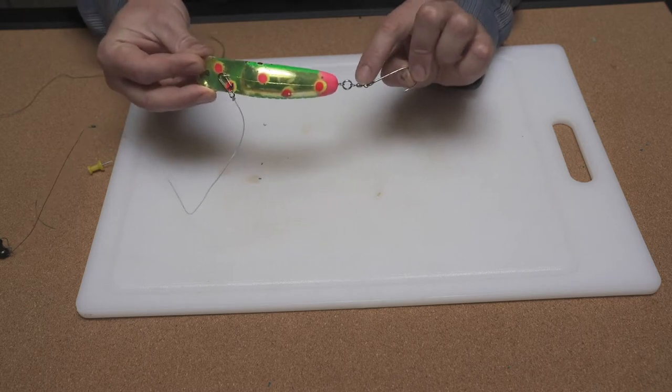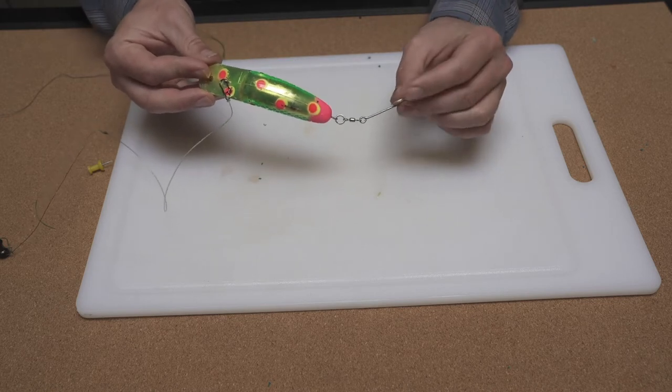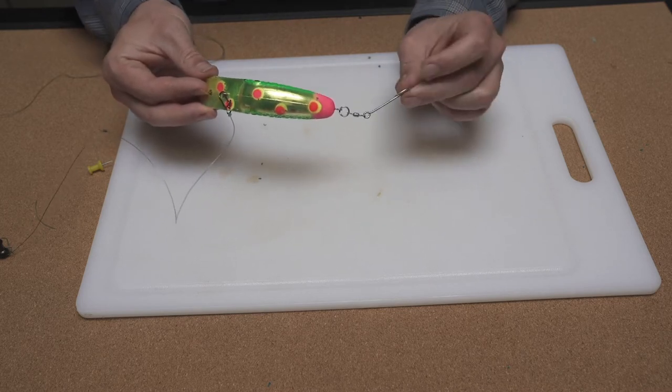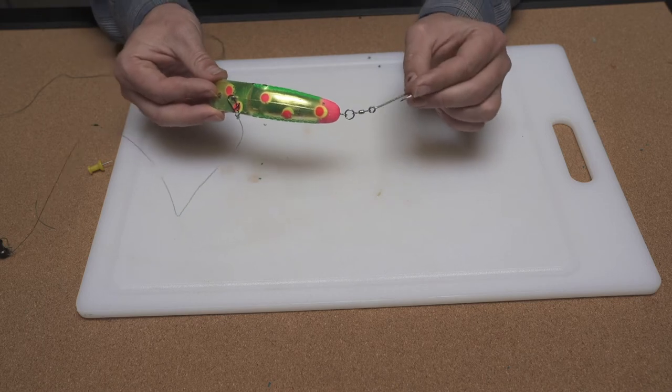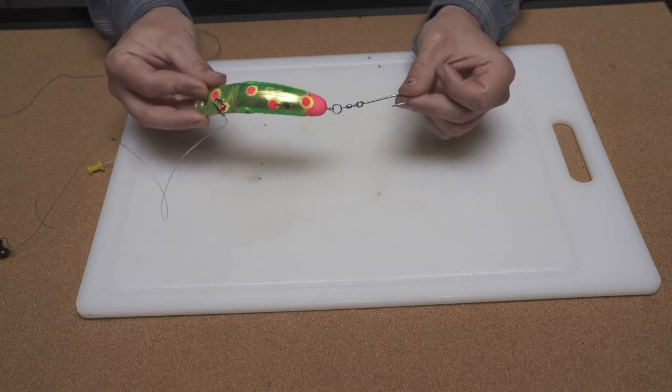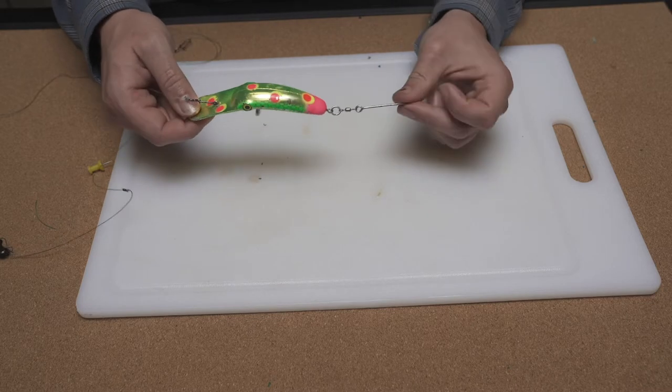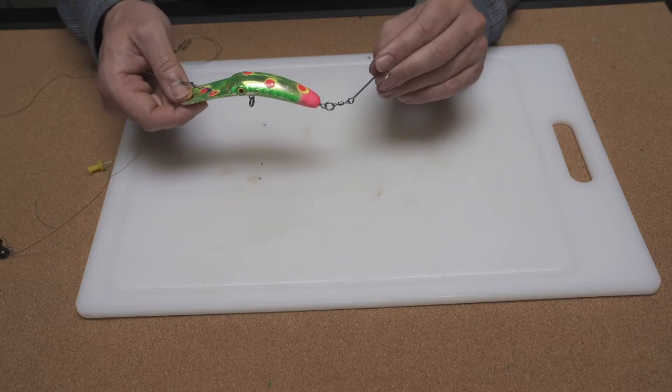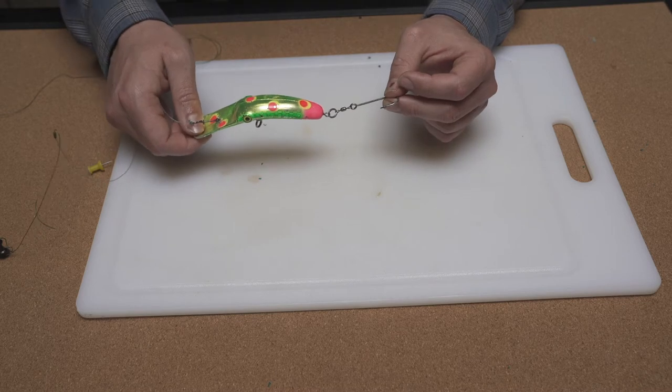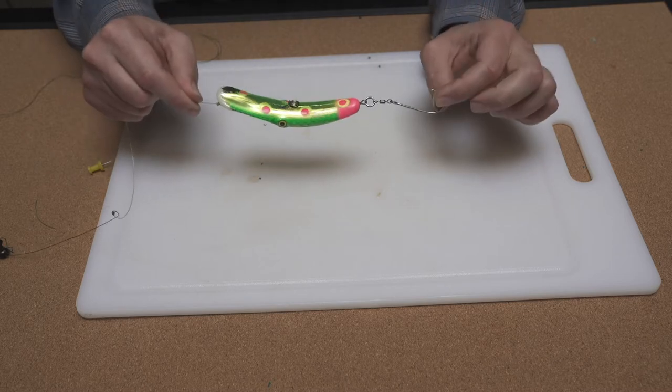There are other options for single hooks. Owner and Mustad both make a similar hook in a similar style. The sizing is pretty similar as well. Gamagatsu makes a single hook that's called a 5-10 saiwash or a 5-10 spoon hook. It's a much shorter shank and a much wider bend and the barb is actually on the outside of the hook. Those are a viable option. I've used those with great success. They are a bit more expensive and I don't know that the price is worth the performance that you get. They're a great hook if you don't mind spending the money. Certainly run them but that is a setup that works very well.